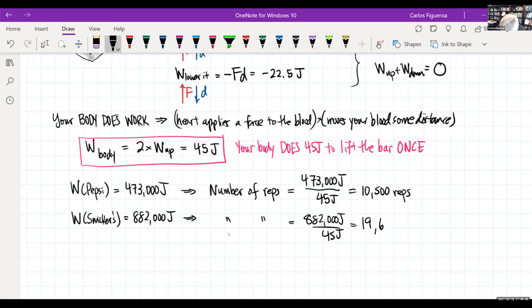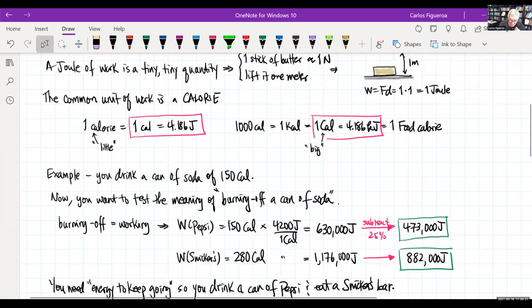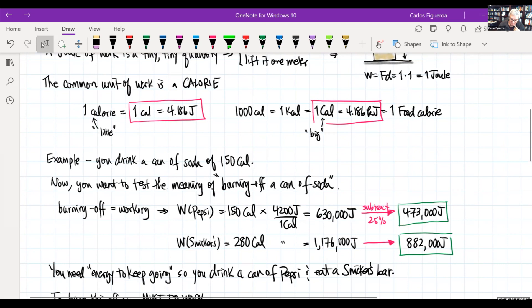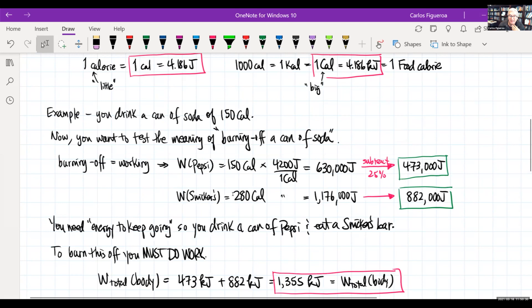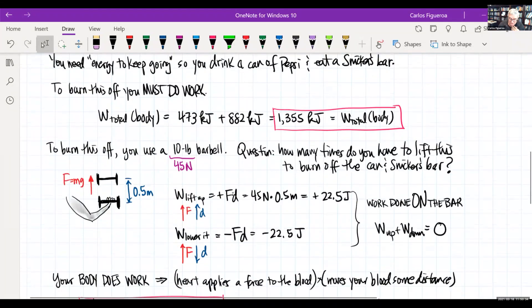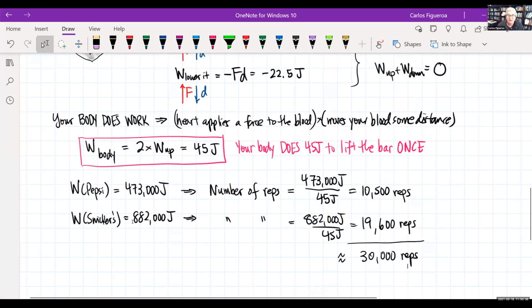If you add the total, that's approximately 30,000 reps. What I like about this discussion is that people don't realize what it means to have a can of soda that's 150 calories. People don't understand what it means when you say 280 calories for a Snickers bar. It puts into perspective what a joule is by telling you what the working or burning off is of something that you put into your body.